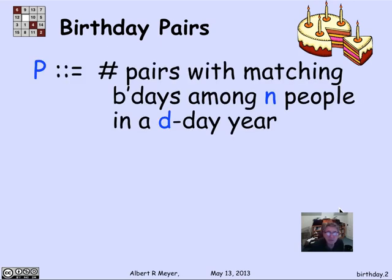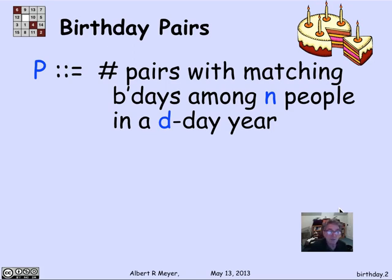Suppose I have a group of n people and there are d days in the year, keeping the parameters abstract. We're implicitly assuming that each person is a random variable — a random choice of a birthday. We're going to assume that all birthdays are equally likely. Real birthdays aren't — January and November tend to be more popular months — but in crypto applications things really are uniform, and it makes our analysis easy if we assume birthdays are equally likely.